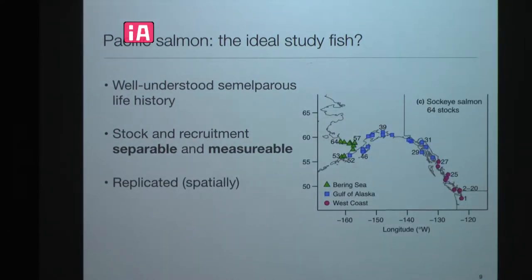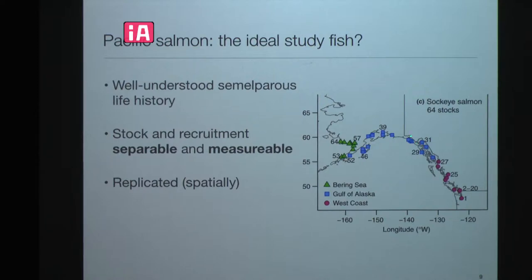Salmon can also be somewhat replicated — you can analyze them as replicated systems. This example shows a bunch of sockeye salmon populations spread from Washington up through British Columbia, Southeast Alaska, the Gulf of Alaska, and the Bering Sea. These are all sockeye salmon, so presumably they share some innate characteristics that we can treat as replicates, and we can account for other types of variation as well.